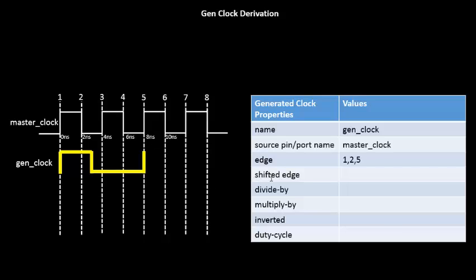This is where the shifted edge comes into the picture. The shifted edge says that this edge is shifted by how many nanoseconds from your master clock. For the first edge, the rising edge of the GenClock is on the first edge of the master clock. We have to say that the rise edge of the GenClock is shifted by how many nanoseconds from the first edge of the master clock. The answer is zero, so we put zero. Next, we ask: the fall edge of this GenClock is shifted by how many nanoseconds from the second master clock edge?